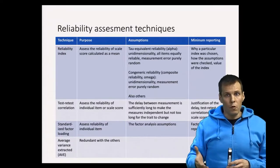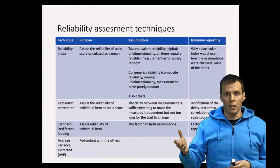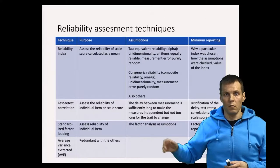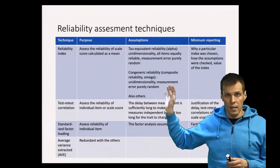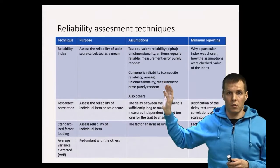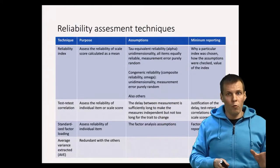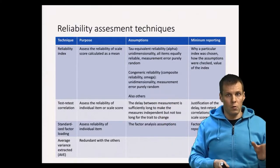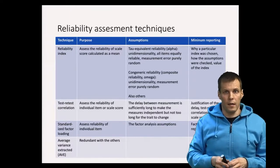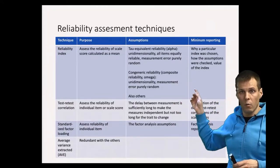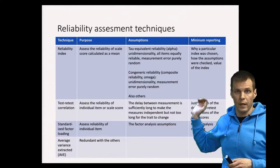The second most popular is congeneric reliability, also called composite reliability or coefficient omega, which assumes unidimensionality and random measurement error. The difference is that congeneric reliability allows the indicators to differ in their individual reliability. For minimal reporting, you must explain why you chose a particular index, justify the assumptions and explain how they were checked, and then report the actual value of the index.